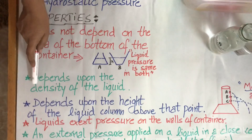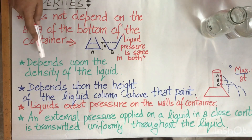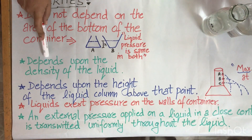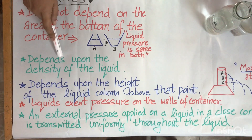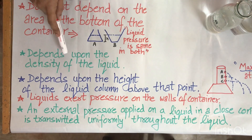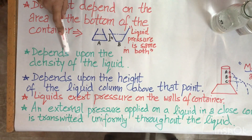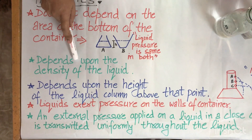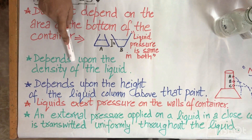Liquid pressure also depends upon the density of the liquid — more density means more liquid pressure, and less density means less liquid pressure. So the liquid pressure exerted by honey or glycerine will be more than that of water at the same height, because the density of glycerine and honey is greater than water.